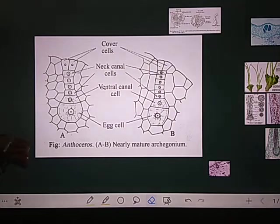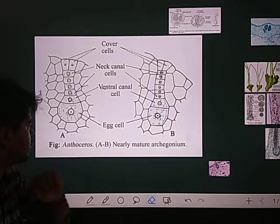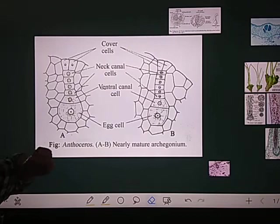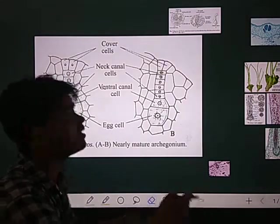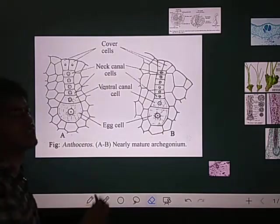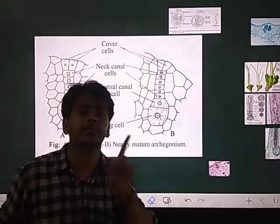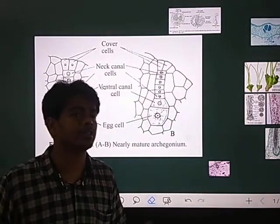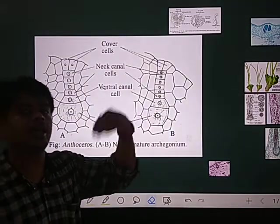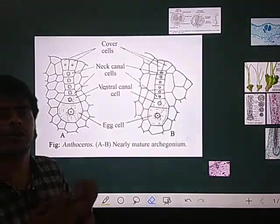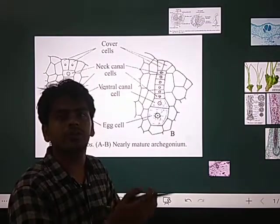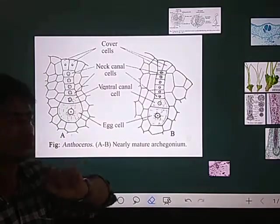At the top you can observe two cover cells. When maturity is reached before fertilization, all the canal cells inside the neck and venter - the neck canal cells and venter canal cells - dissolve when they come in contact with water.